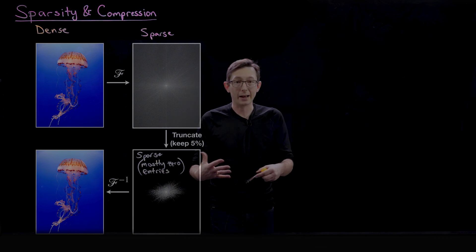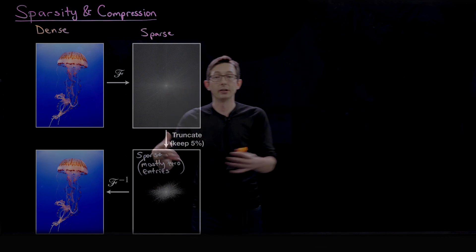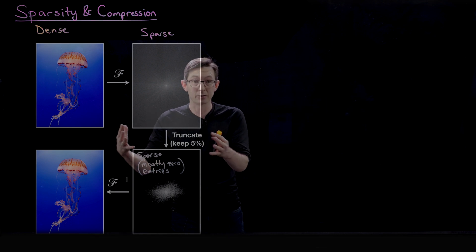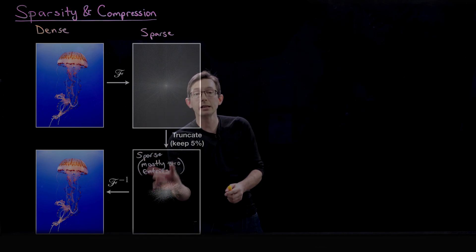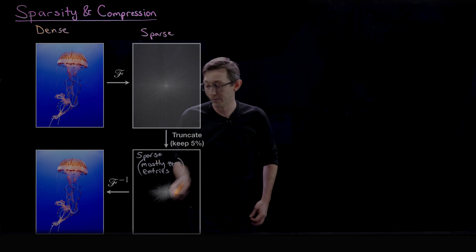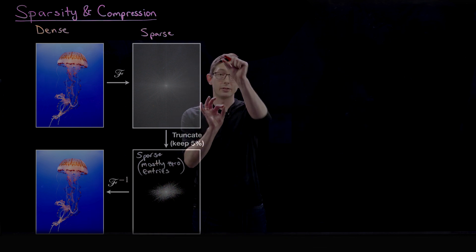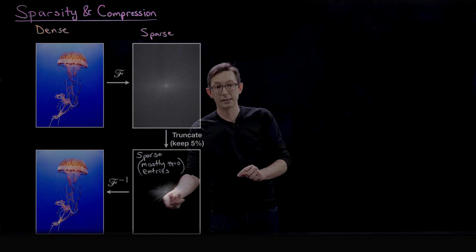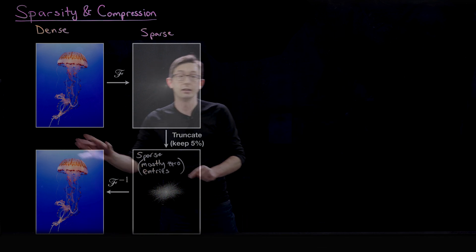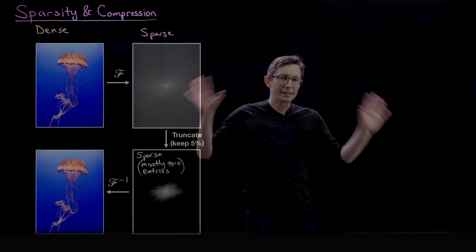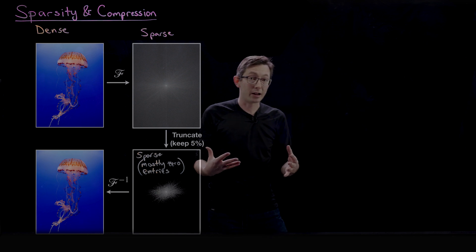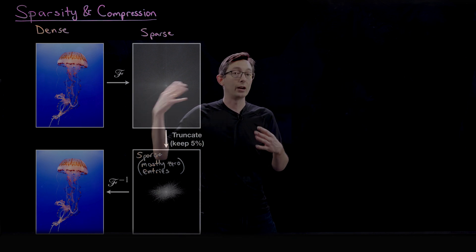So that's what I mean by sparse: mostly zero entries. It's a mathematical object, usually a vector or an array, that mostly contains zero entries. You can throw away most of the information and there's only a few entries that are non-zero. In this case, these core Fourier frequencies in the middle that you need to reconstruct the image.